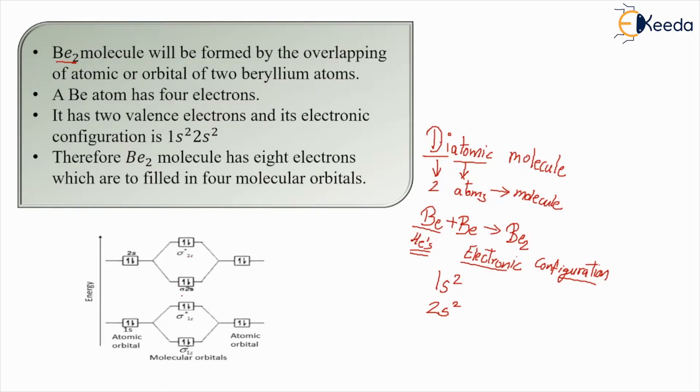So if you can see over here, this is the energy, this is sigma, this is sigma star, this is the 2s energy level, this is the 1s energy level. There are two electrons over here, two electrons in the 2s, and over here also there are two electrons, two electrons in the 2s energy level, two electrons in the 1s energy level. This is the atomic orbital and this thing overall over here is the molecular orbital.